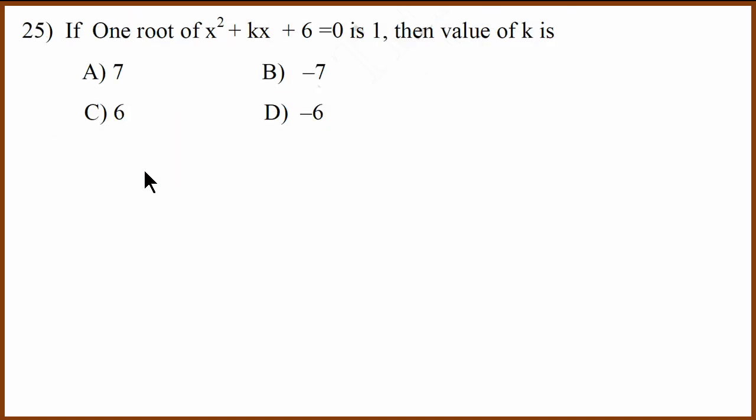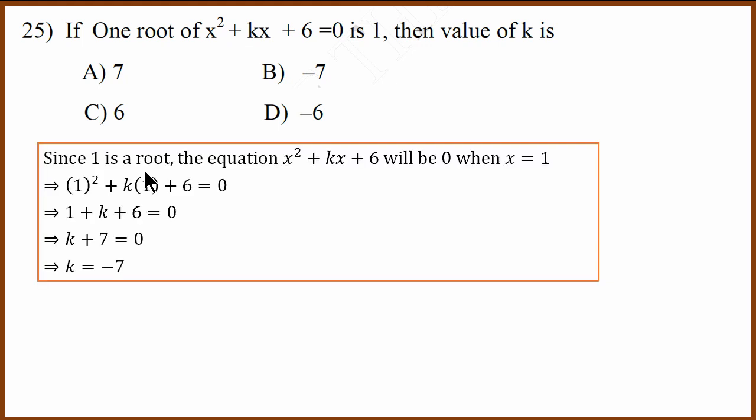If one root is given, find the value of k. If the root is given, then the equation will be 0 at x equals 1. If you substitute, you can show that k value is minus 1. Important, if root is given, when you substitute that x value, the equation becomes 0. So 1 plus k plus 6 will be 0, which means k equals minus 7.